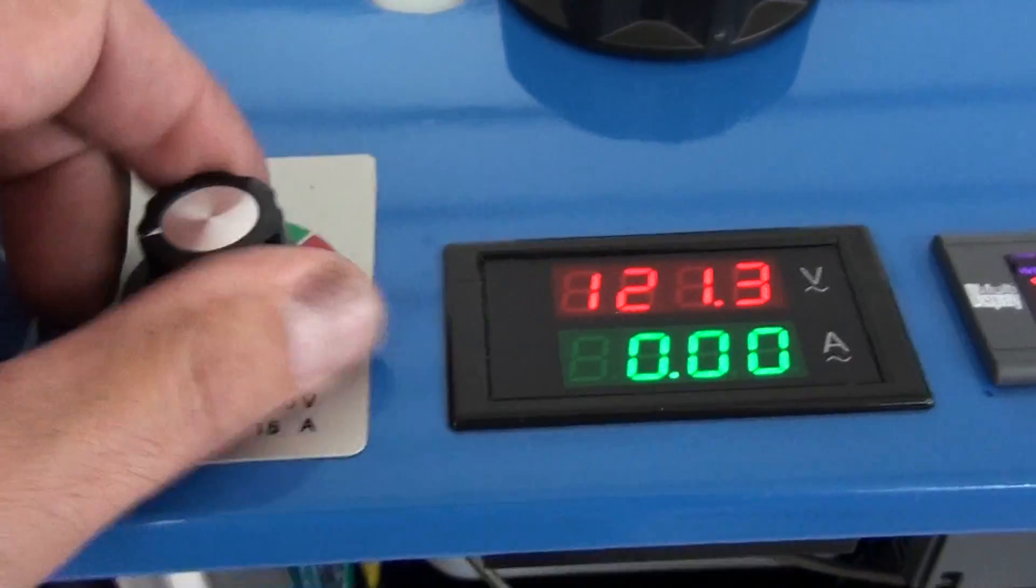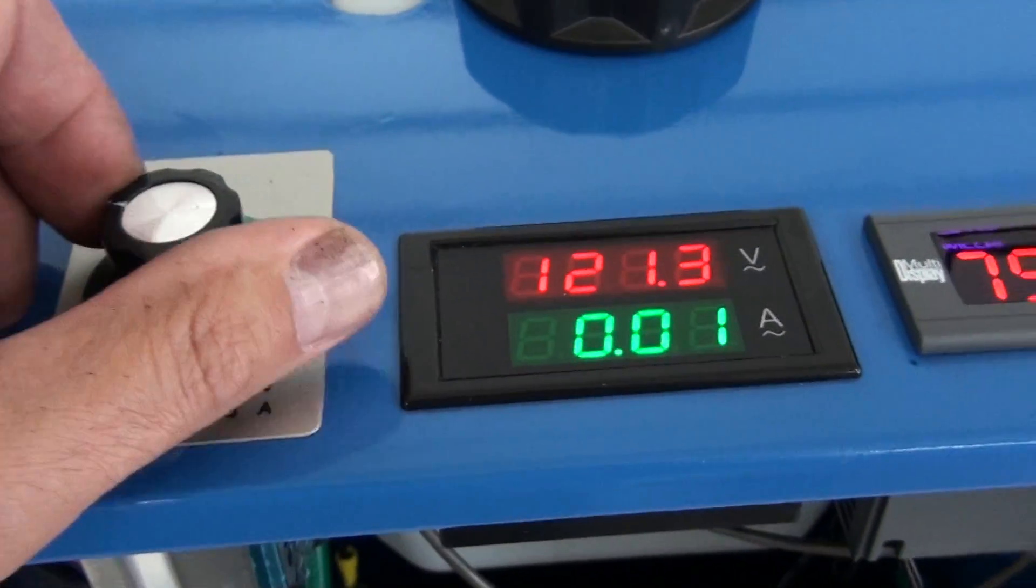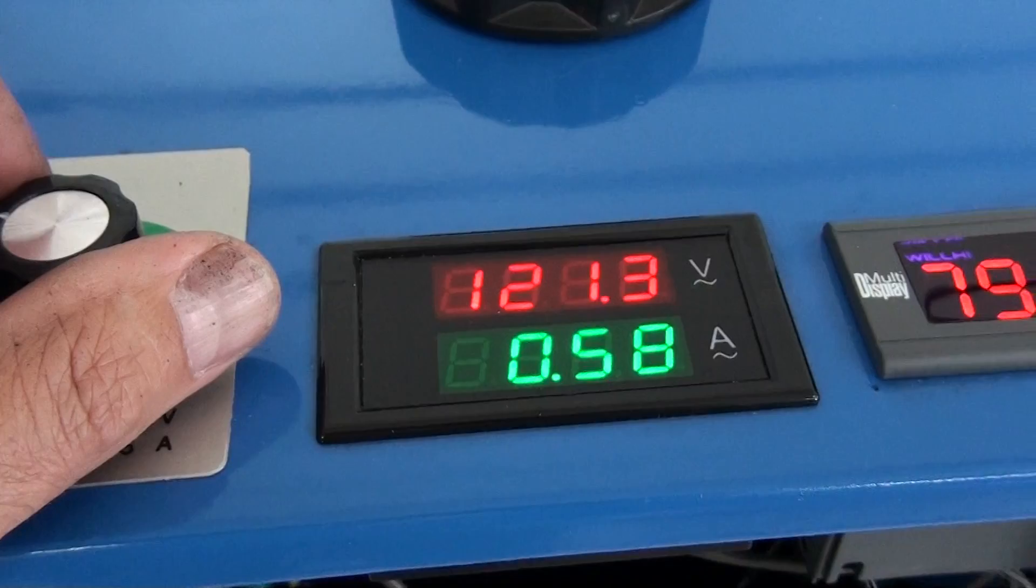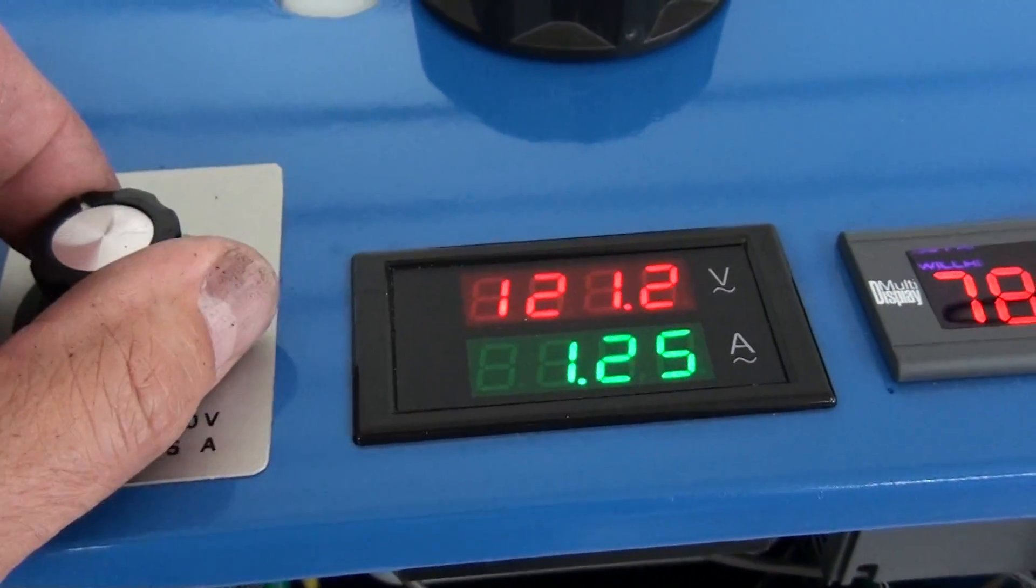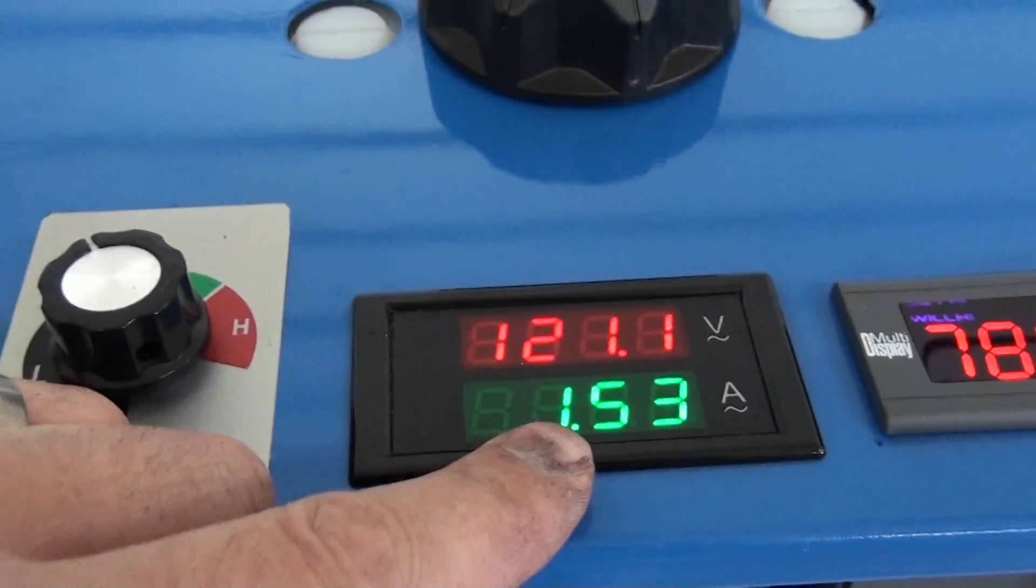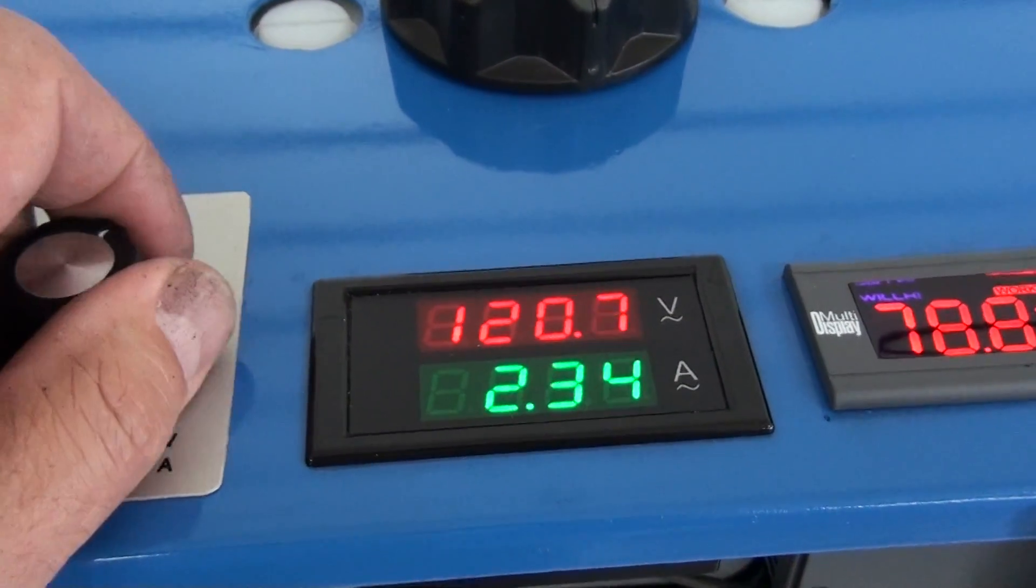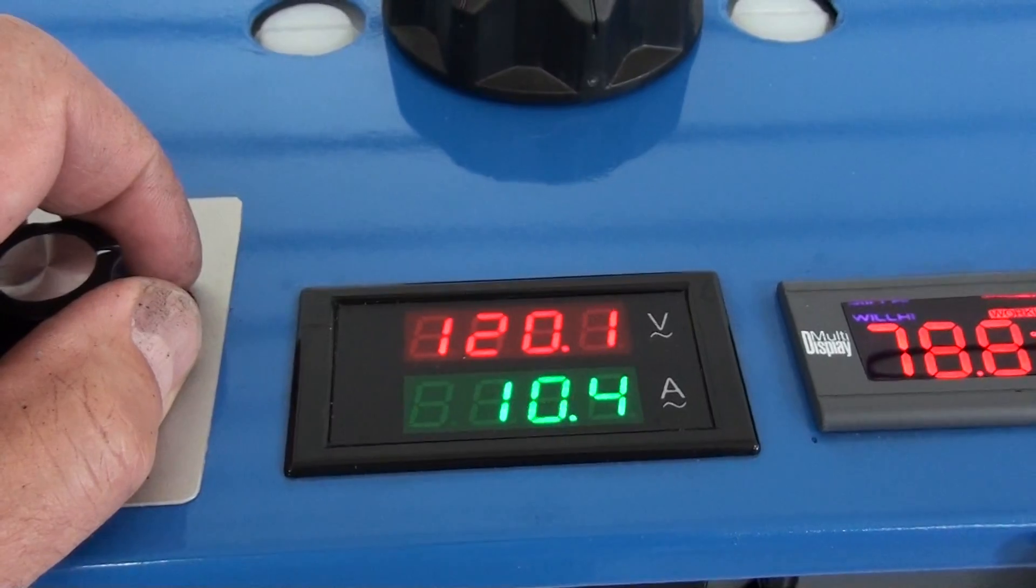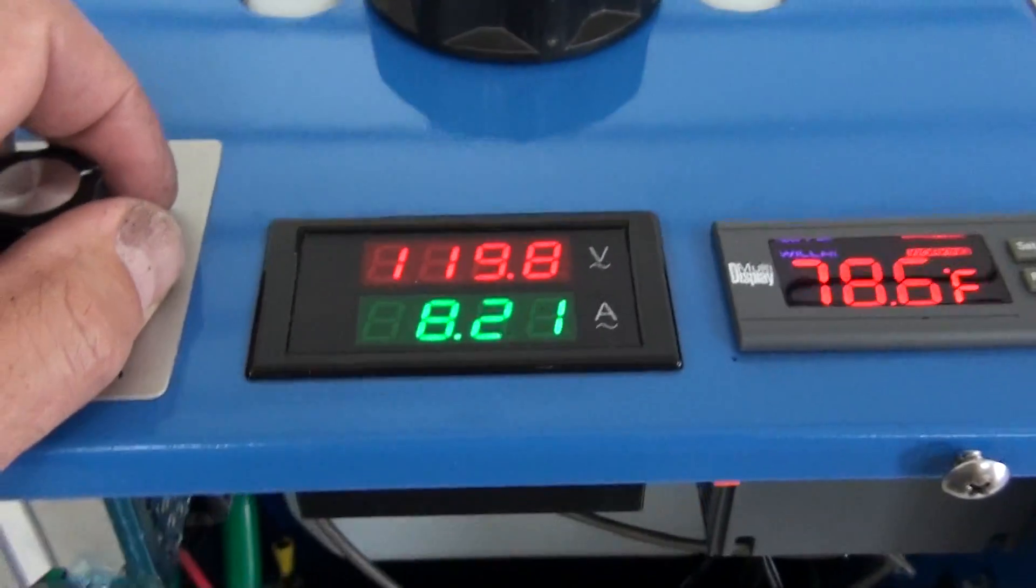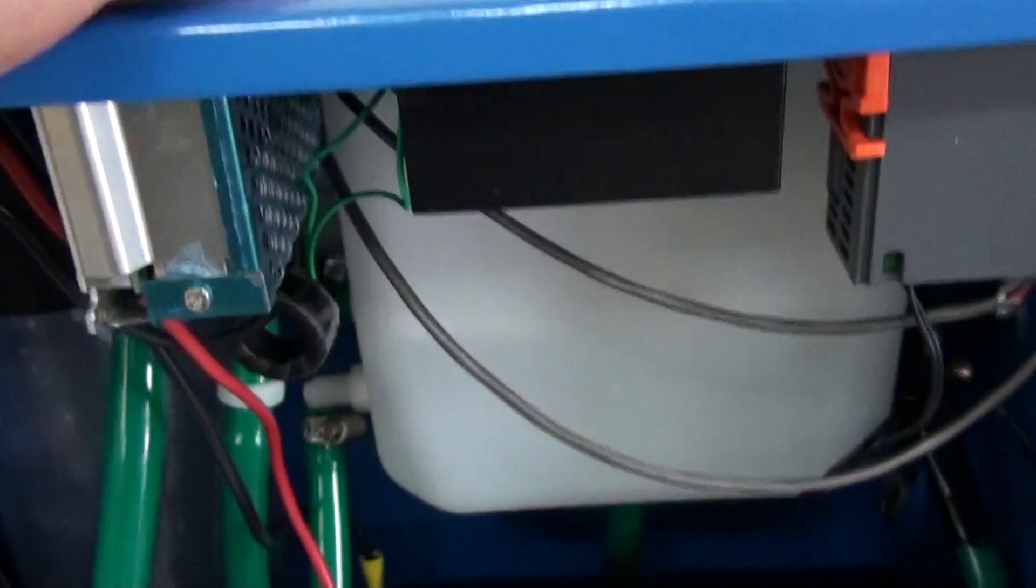So to begin the process of producing HHO, turn this to the right. You can see that it's drawing some amperage and some power.